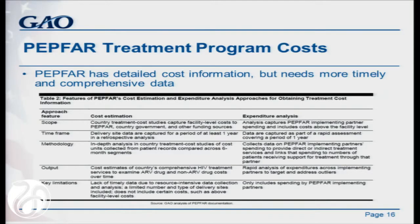To get at expanding treatment programs, PEPFAR has detailed cost information, but it needs to be more timely and comprehensive. They use two complementary approaches. The first is cost estimation based on the PEPFAR ART costing model, which provides information on the cost of delivering comprehensive HIV treatment for PEPFAR and other funders. This is limited by timeliness — most studies going into the model were completed in 2009, with typically a limited number of sites, about nine, which is a definite limitation.